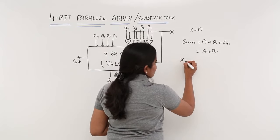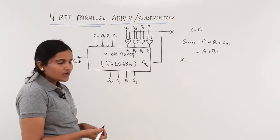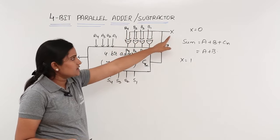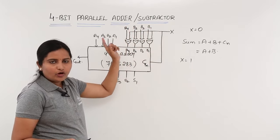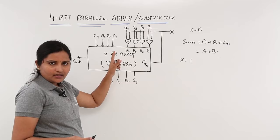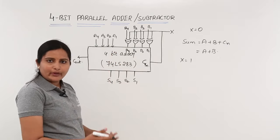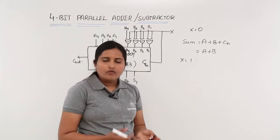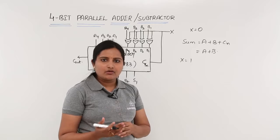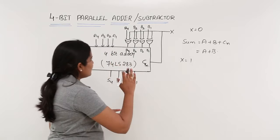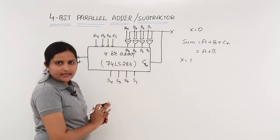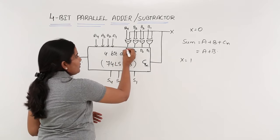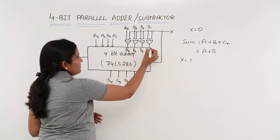In the X equal to 1 case, one input of each XOR gate is connected to X equal to 1. For an XOR gate, anything XOR with 1 gives its complement — so A XOR 1 equals A-bar, and 1 XOR 1 equals 0. So you are getting the complement of each input variable: B4-bar, B3-bar, B2-bar, B1-bar.